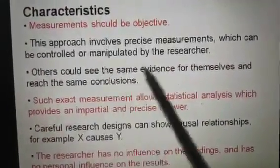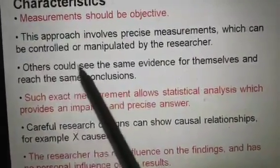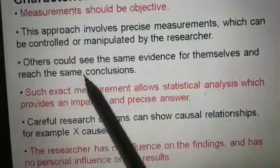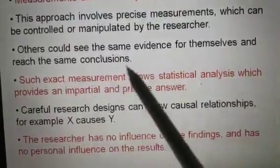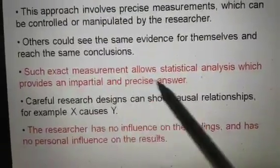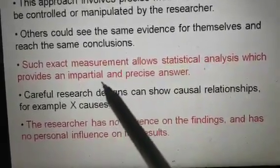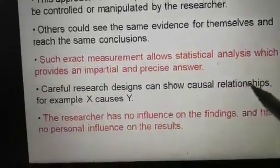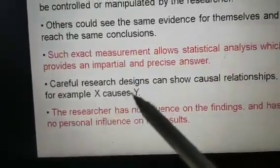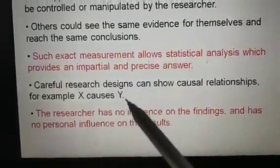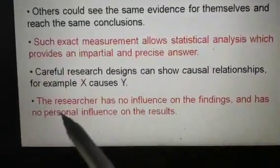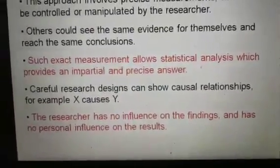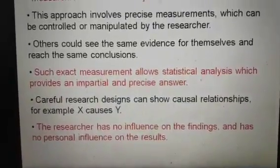Measurement should be objective in Positivism. This approach involves precise measurements which can be controlled or manipulated by the researcher. Others could see the same evidence for themselves and reach the same conclusions. Such exact measurements allow statistical analysis, which provides an impartial and precise answer. Careful research designs can show causal relationships — for example, X causes Y. The researcher has no influence on the findings and has no personal influence on the results. This is very factual; it believes in facts and is a law of truth.